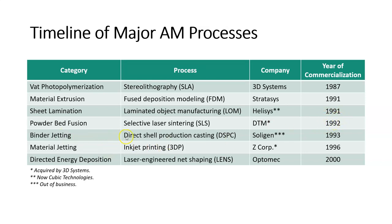Binder jetting: the first process in this category was direct shell production casting, by a company called Soligen, commercialized in 1993. Material jetting: the first process was inkjet printing, abbreviated 3DP, developed by Z Corp (also acquired by 3D Systems), commercialized in 1996. And finally, directed energy deposition — the process known as laser engineered net shaping, or LENS — by the company Optomec, commercialized in the year 2000.